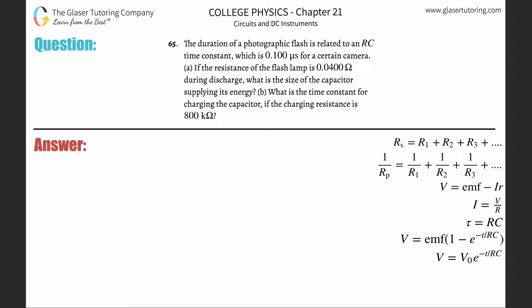Number 65: The duration of a photographic flash is related to an RC time constant which is 0.1 microseconds for a certain camera. Part A: If the resistance of the flash lamp is 0.04 ohms during discharge, what is the size of the capacitor supplying the energy? Let's take a look at what we know. They told us the time constant tau is 0.1, but they gave it to us in microseconds. We need that